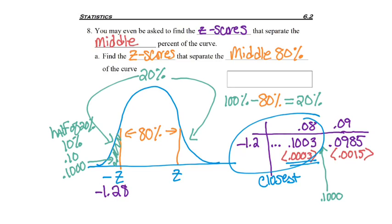And because the table is symmetrical, meaning that we could just chop it down the middle and the left side is a mirror image of the right side, our positive z-score would then just be positive 1.28.